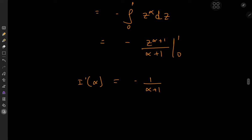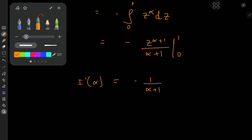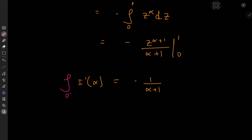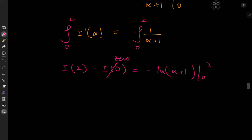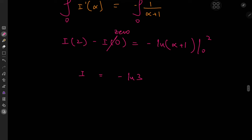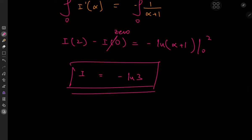To recover the integral, I integrate using a definite integral from 0 to 2 to save time. By the fundamental theorem of calculus, the left-hand side is I(2) − I(0), which we know to be 0. On the right, we have −log(α + 1) evaluated from 0 to 2. So I(2) equals −log(3) + log(1) = −log(3). That's our target integral — it sorts out to negative log 3.